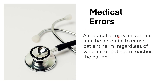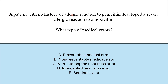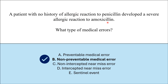A medical error is an act that has the potential to cause patient harm, regardless of whether or not harm reaches the patient. A patient with no history of allergic reaction to penicillin developed a severe allergic reaction to amoxicillin. What type of medical error is this? The correct answer is non-preventable medical error. The correct history was taken, but still the patient developed an allergic reaction to penicillin.